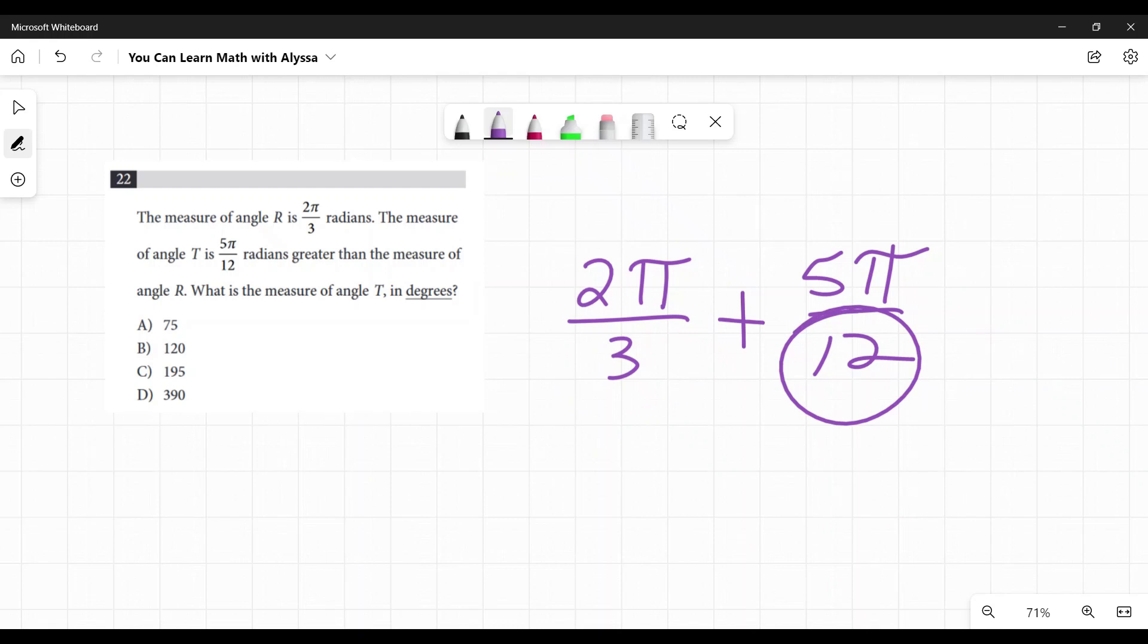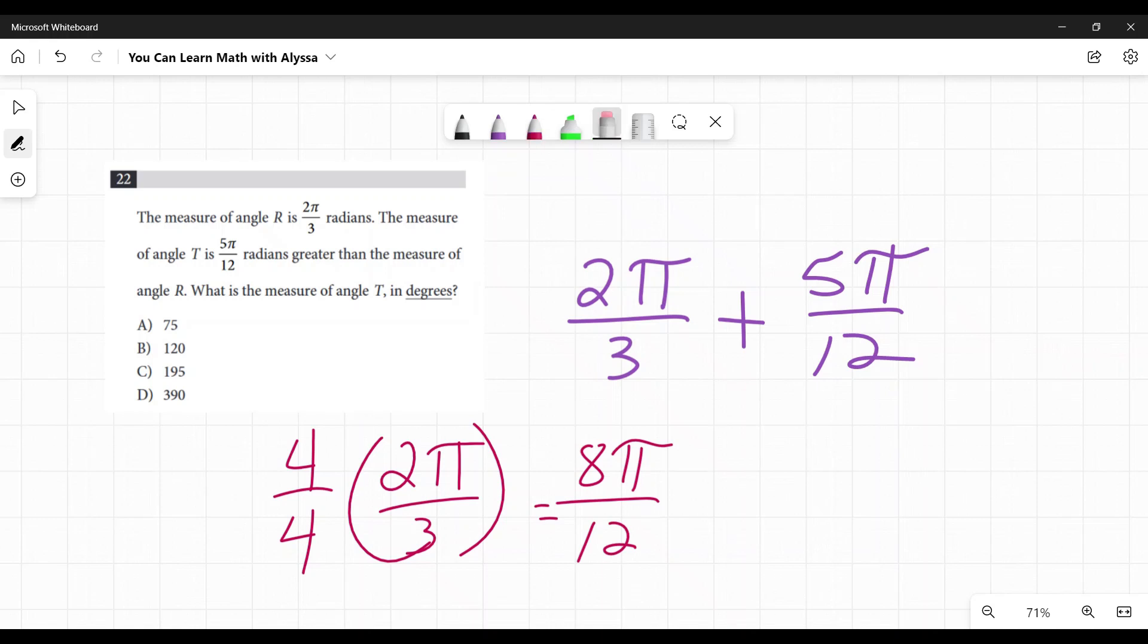To get 2π over 3 to have a denominator of 12, we're going to need to multiply it by 4 over 4. So on top, that gives me 8π, and on the bottom I have my 12. So now I can add those. 8π plus 5π is 13π over 12. So that's my first part done.